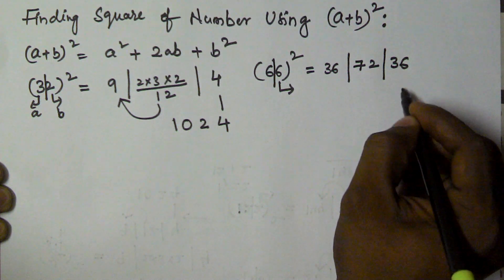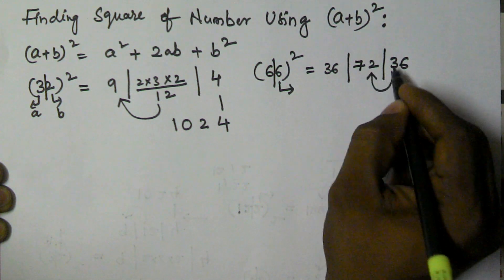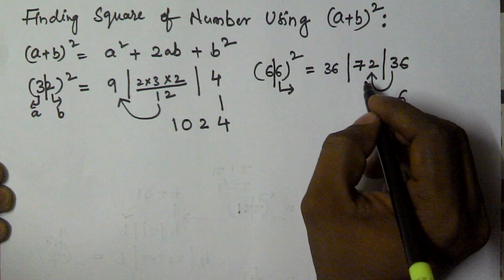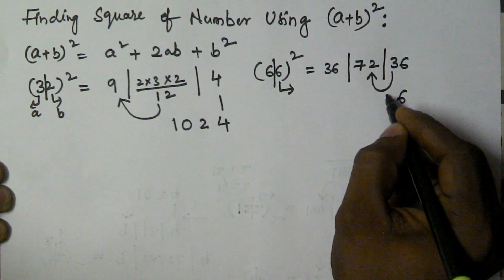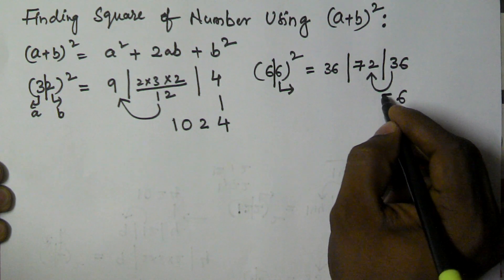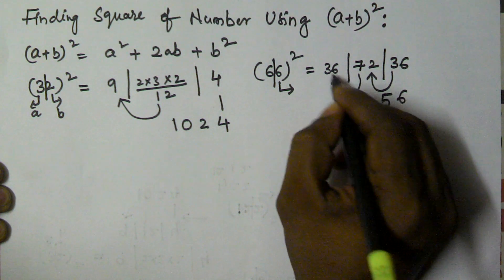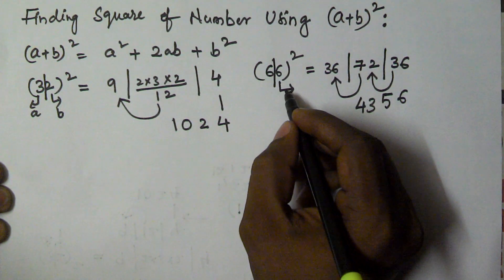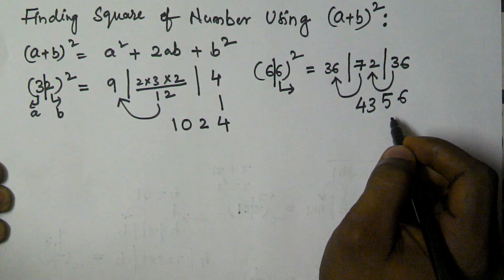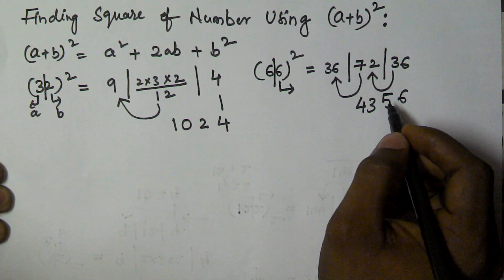Taking the right-most single digit of 36 — that is 6 — as it is, and carrying 3 to add to 72, giving 75. Then taking the right-most digit 5 as it is and carrying 7 to add to 36, giving 43. So the square of 66 is 4356.